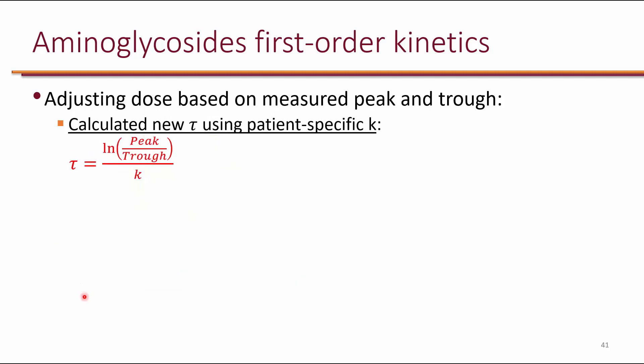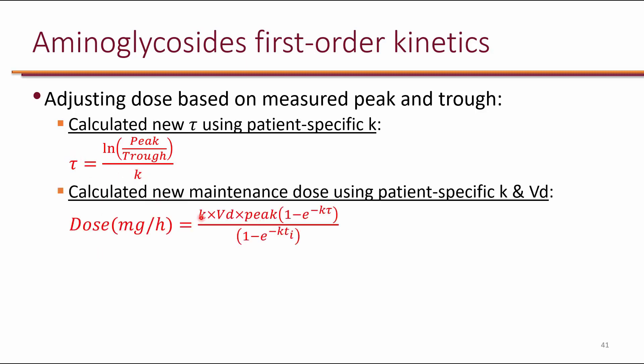What we do next is to calculate tau again. So now, instead of the estimated k, we use the actual k that we calculated in the patient to get the new tau. Then using the new tau, and using the individualized k and the individualized volume of distribution, now we come up with a dose that's very accurate in the patient.